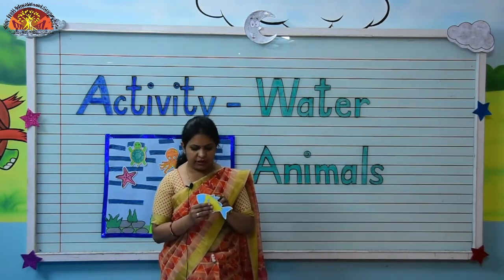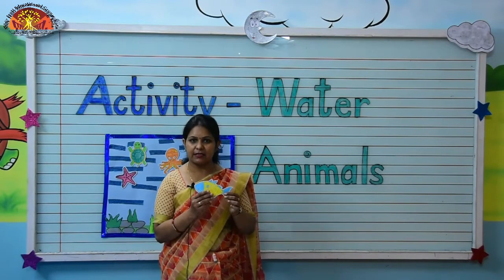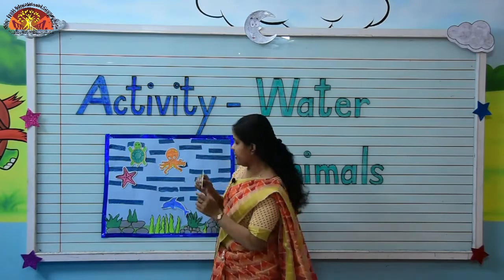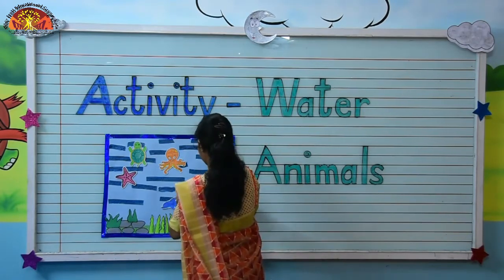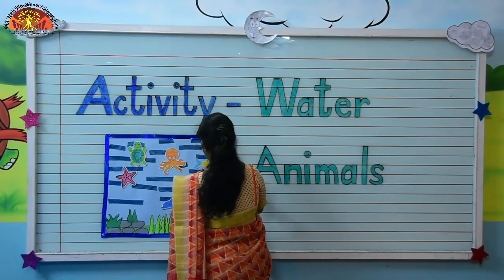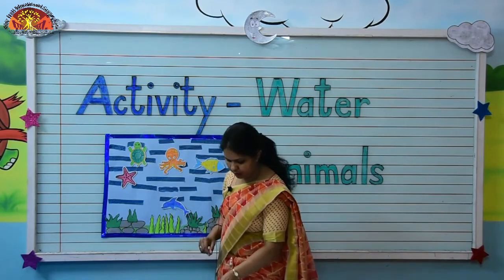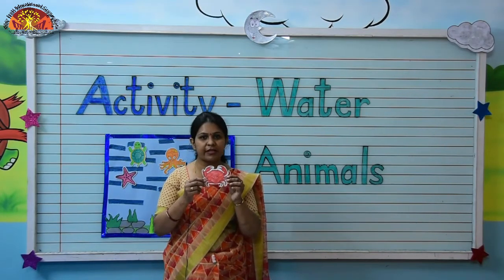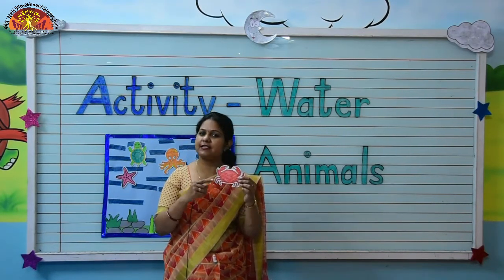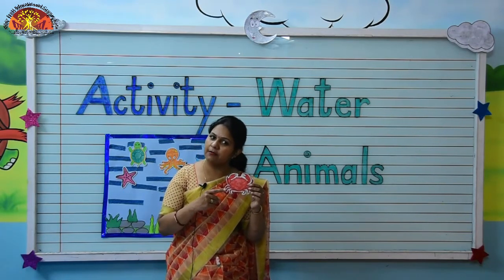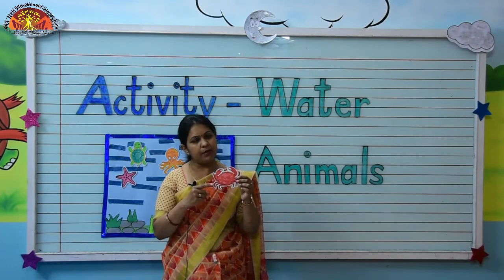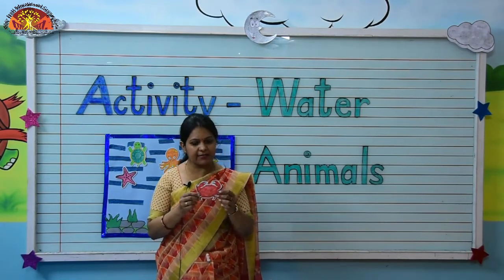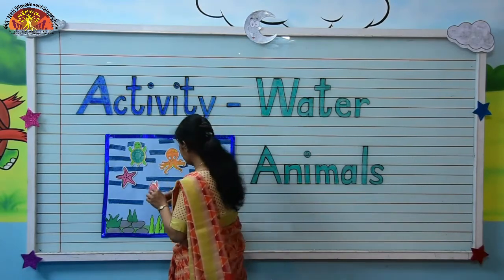So tell me kids, which water animal is this? This is fish. We will paste it here. Very good. Now, which water animal is this? This is crab — C-R-A-B, crab. Crab has ten legs. We will paste it here.